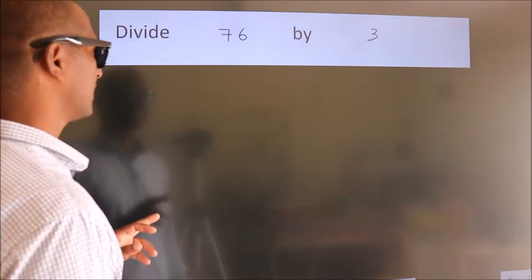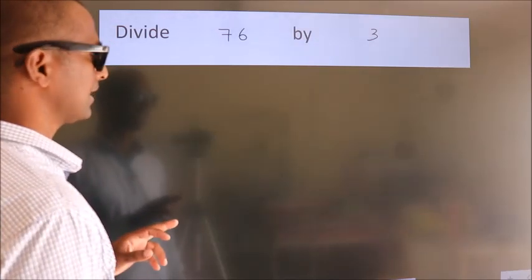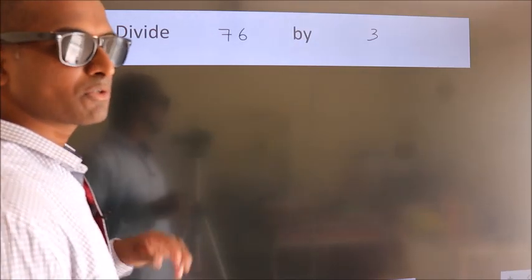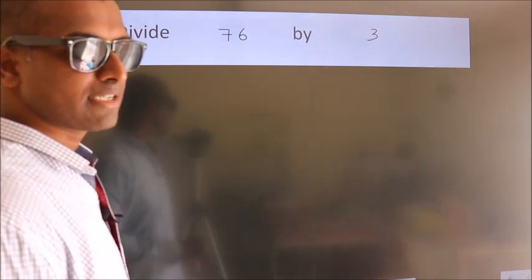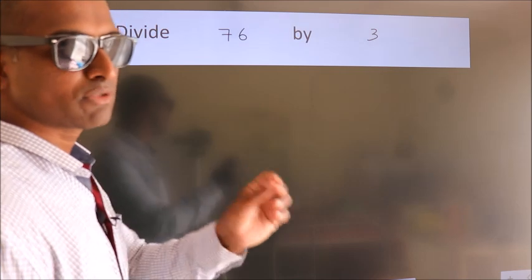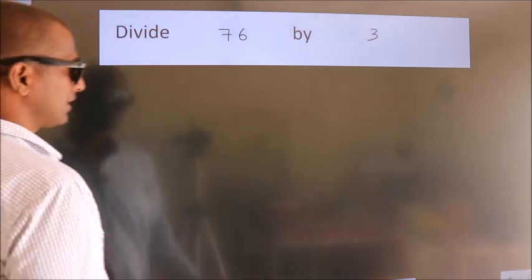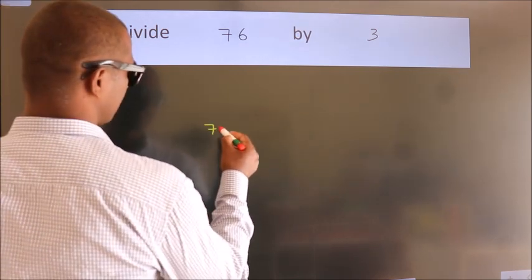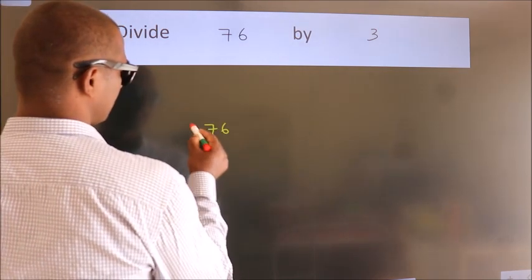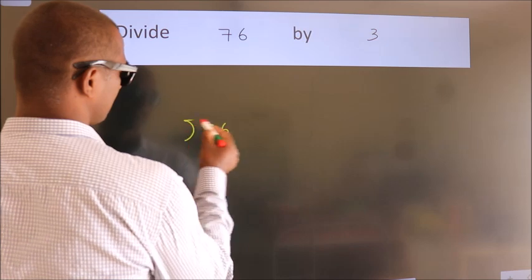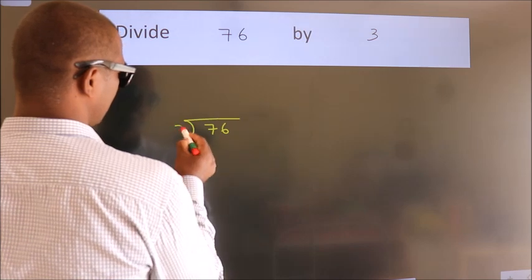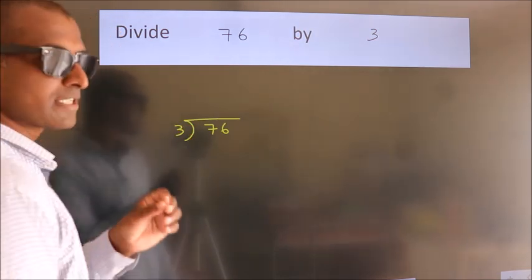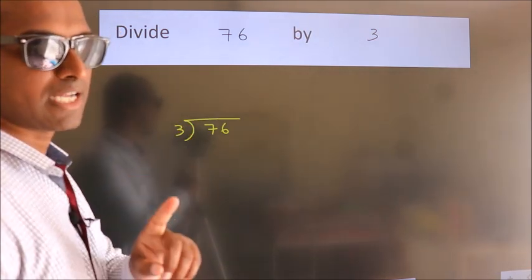Divide 76 by 3. To do this division, we should frame it in this way: 76 here, 3 here. This is your step 1.